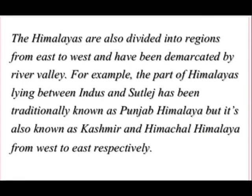The Himalayas are also divided into regions from east to west, demarcated by river valleys. For example, the part of the Himalayas lying between the Indus and Sutlej has been traditionally known as the Punjab Himalayas, but is also referred to as the Kashmir and Himachal Himalayas from west to east respectively.